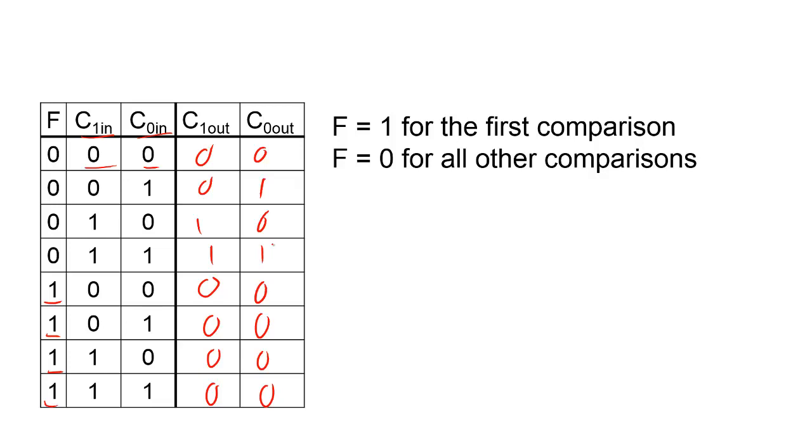And we can now try to derive a Boolean expression for each of these. And so we can see that here we've got C1 out is equal to F bar C1 in. And we have C0 out is equal to F bar C0 in.